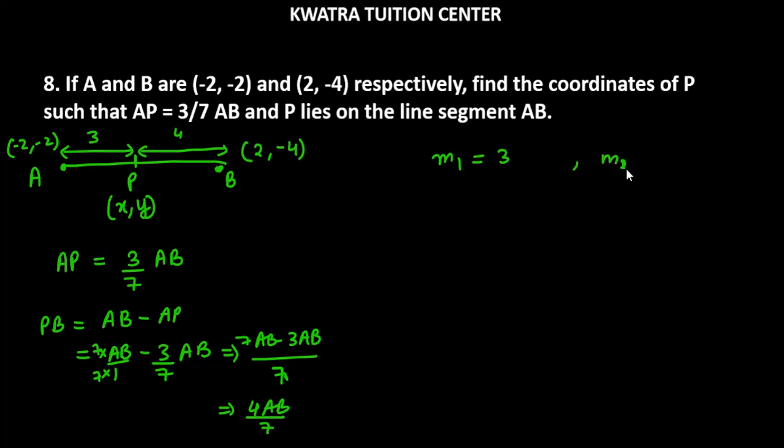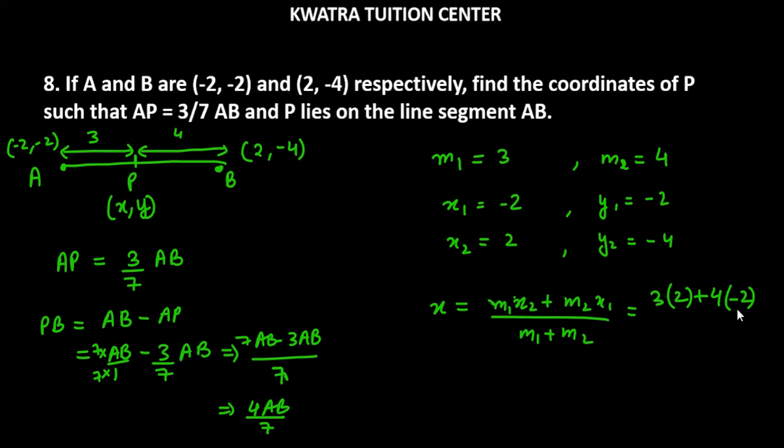So let's write M1 and M2 first. M1 is 3, M2 is 4, X1 is -2, X2 is 2, Y1 is -2, Y2 is -4. Now we will use the section formula and find the value of X. So it is M1 into X2 plus M2 into X1 over M1 plus M2. M1's value is 3, X2's value is 2, M2's value is 4, X1's value is -2, and M1 plus M2 is 7.